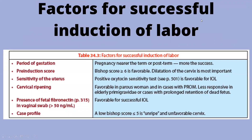Factors that assess for successful induction of labour: the period of gestation — if pregnancy is near term or post-term, chances of success are higher. Pre-induction Bishop's score — if above 6, that's favourable, and dilatation of the cervix is the most important factor. Sensitivity of the uterus — oxytocin sensitivity test, if positive, is favourable. Cervical ripening — favourable in parous women and in cases with premature rupture of membranes. Presence of fetal fibronectin is also favourable. A low Bishop's score of 5 or less points towards an unfavourable cervix.